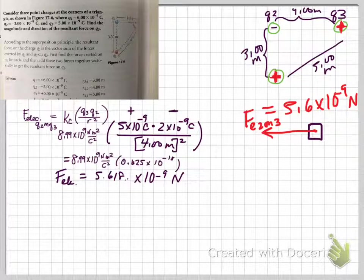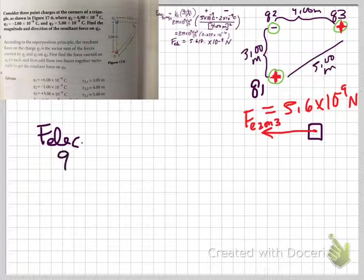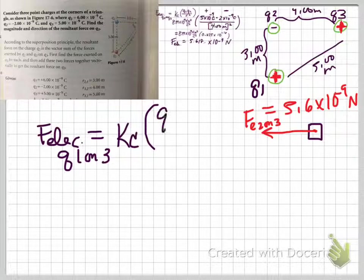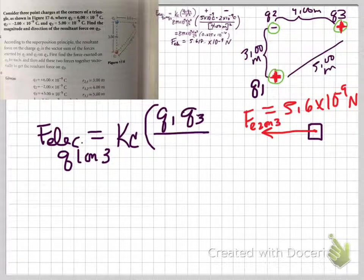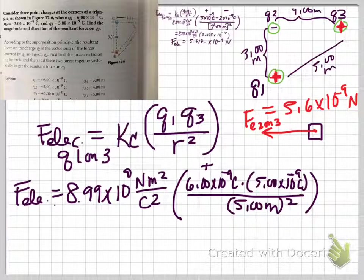I can label that as force electric two on three. And I can put in my magnitude. I'm just going to put 5.6 times 10 to the negative 9th newtons. Because now it's going to end up coming down to a sum of forces problem. Now I've got to deal with the force of Q1. This is our Q1 on Q3.